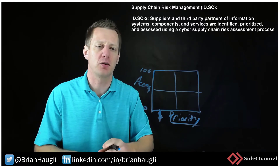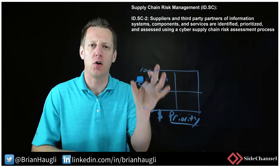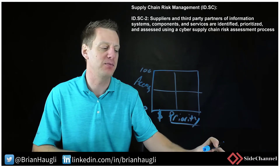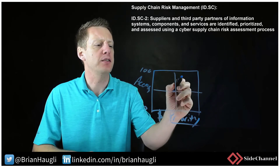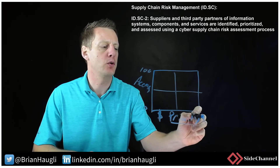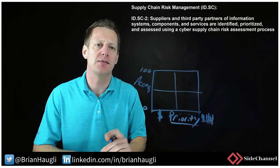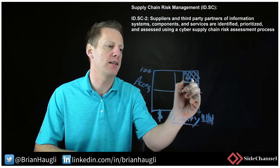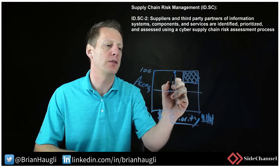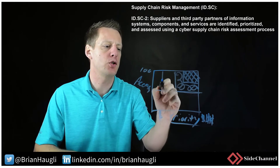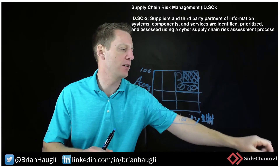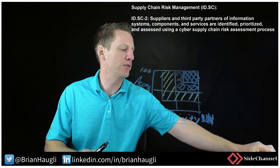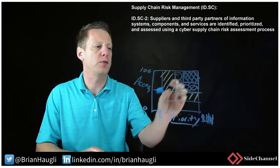As you start plotting these vendors into a system, you can determine what the actual assessment process looks like. With hundreds of vendors, assessing them all isn't cost effective. Vendors with high importance and high access to your organization fall in the upper quadrant and should be assessed the most. Then work your way out — vendors in the second and third groups receive a different level of assessment than the most critical ones.